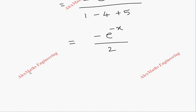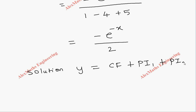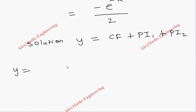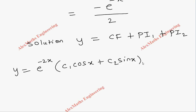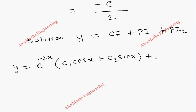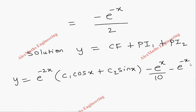After completing the particular integrals, we write the complete solution. The complete solution is y = complementary function + PI₁ + PI₂. Therefore y = e^(-2x)·(c₁·cos(x) + c₂·sin(x)) - e^x/10 - e^(-x)/2.